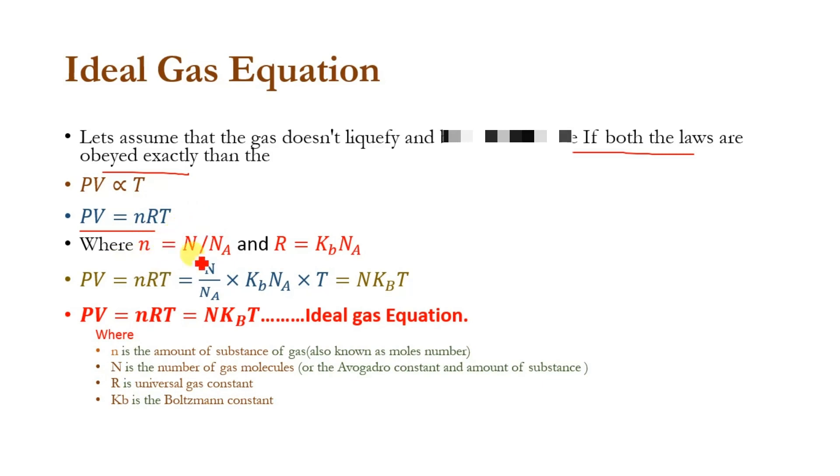n can also be written as N divided by N_A, where N_A is the Avogadro constant and N is the number of gas molecules. R, which is the universal gas constant, equals k_B times N_A, where k_B is the Boltzmann constant and N_A is the Avogadro number.